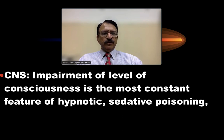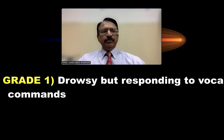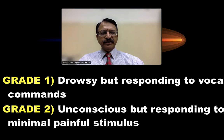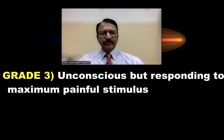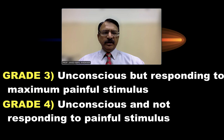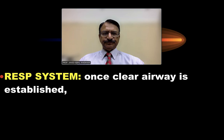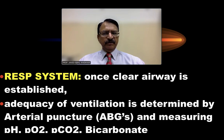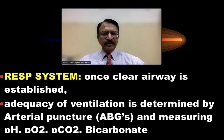Impairment of the level of consciousness is the most constant feature of hypnotic and sedative poisoning. Consciousness is divided into four grades: Grade 1 - drowsy but responding to vocal commands; Grade 2 - drowsy but responding to minimal painful stimuli; Grade 3 - responding to maximum painful stimuli; Grade 4 - unconscious and not responding to painful stimuli. For the respiratory system, once airways are cleared, adequacy of ventilation is determined by arterial blood gases (ABGs): pH, oxygen saturation, CO2 level and bicarbonate.